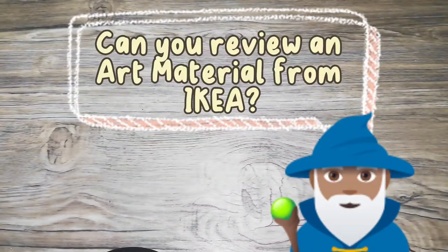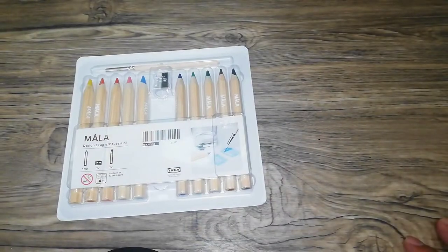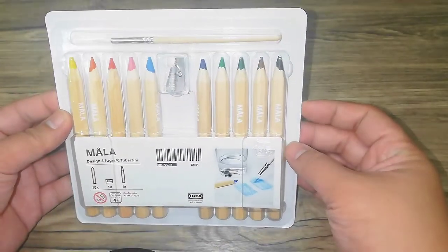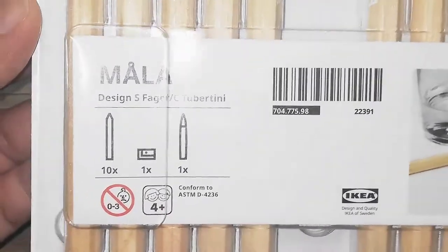Can you review an art material from Ikea? Sure, I can! This is the Ikea Mola. It's a 12-piece set of watercolor pencils.